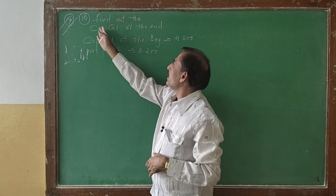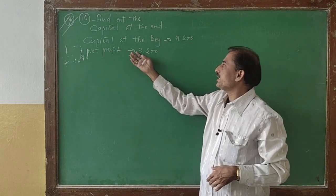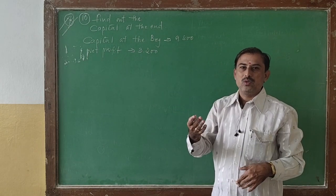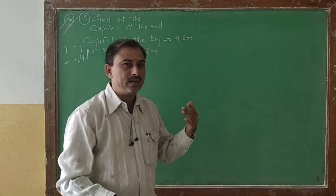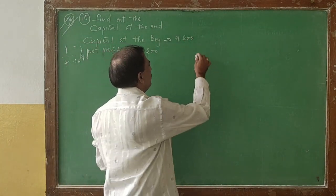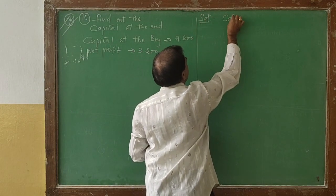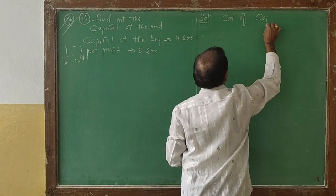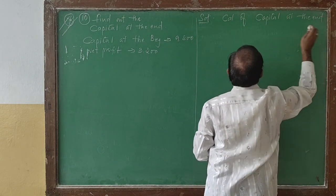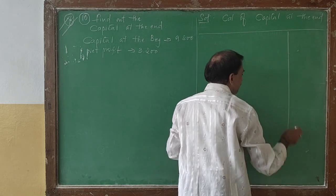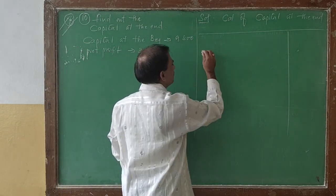They are asking in the problem to find out the capital at the end. They have given capital at the beginning and profit. We will do that in our pro forma only — our standard format. We will not go any other way. We will draw our format first.